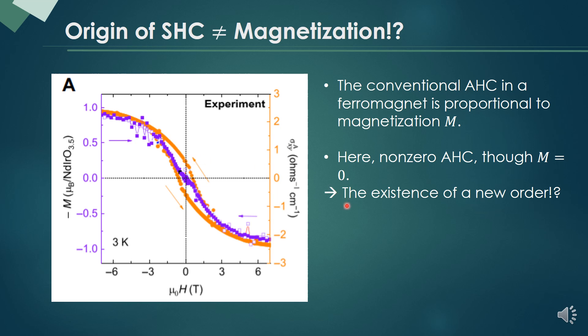Therefore, we expect that there is a new order other than the magnetization itself.